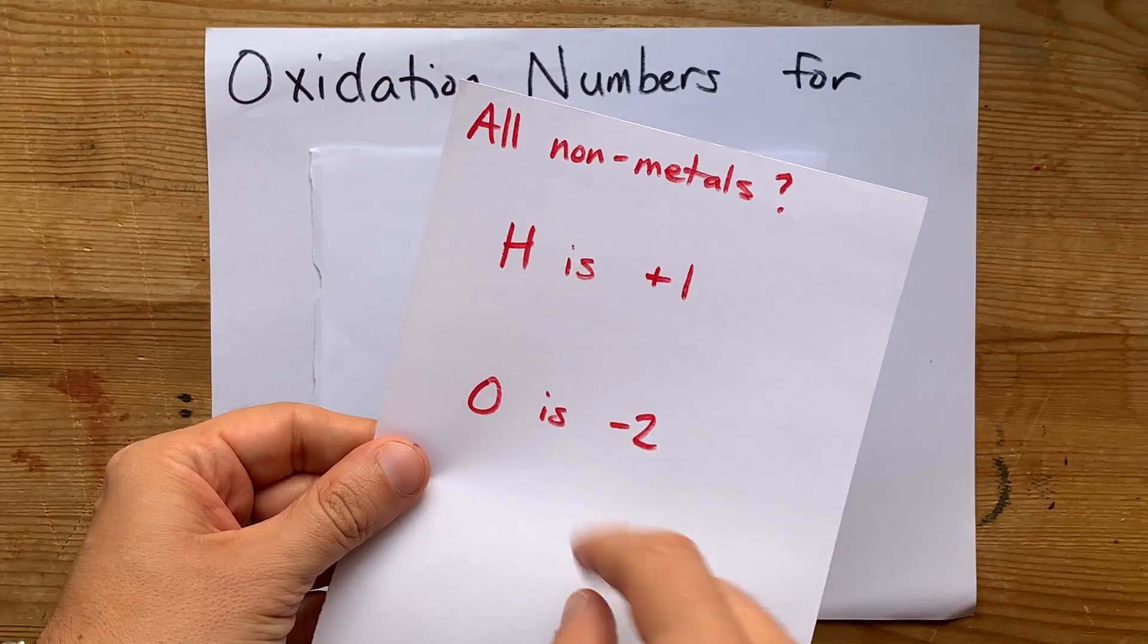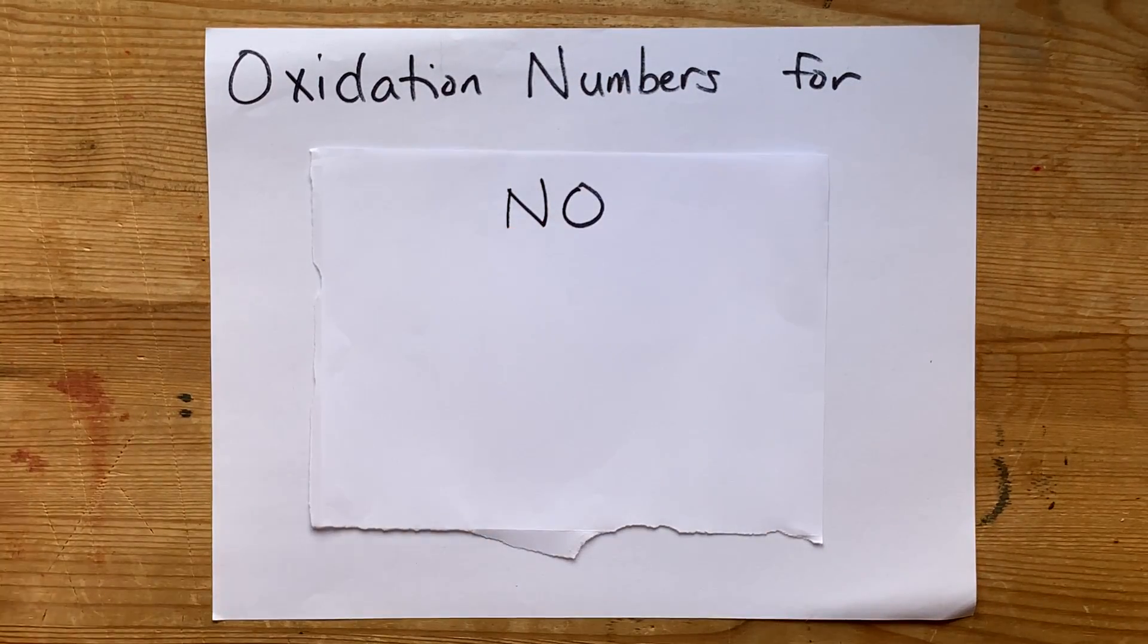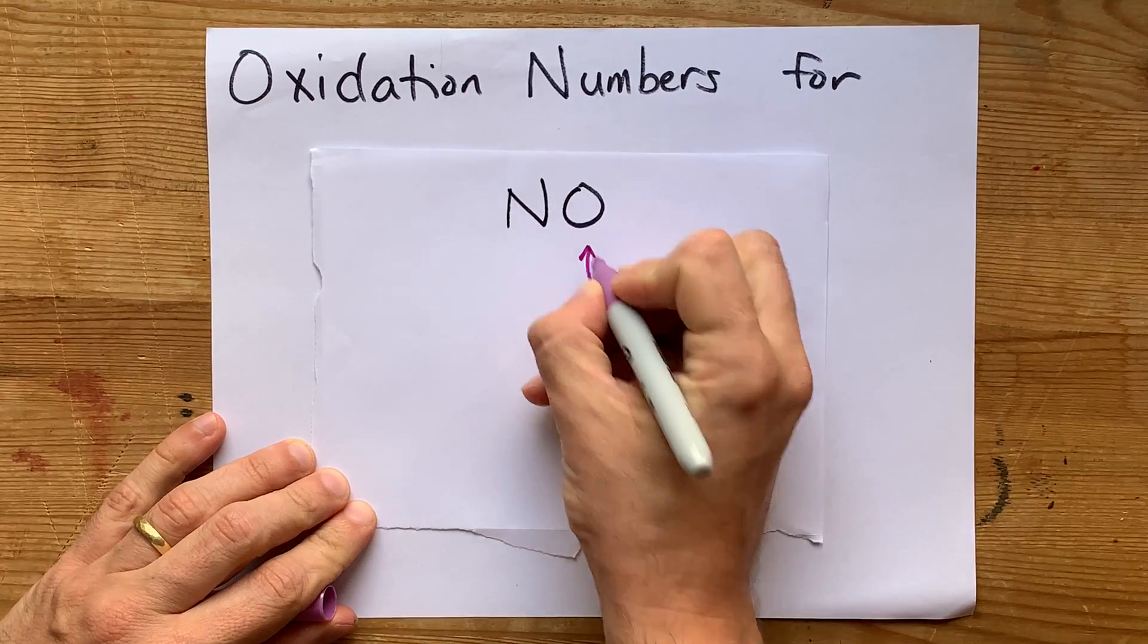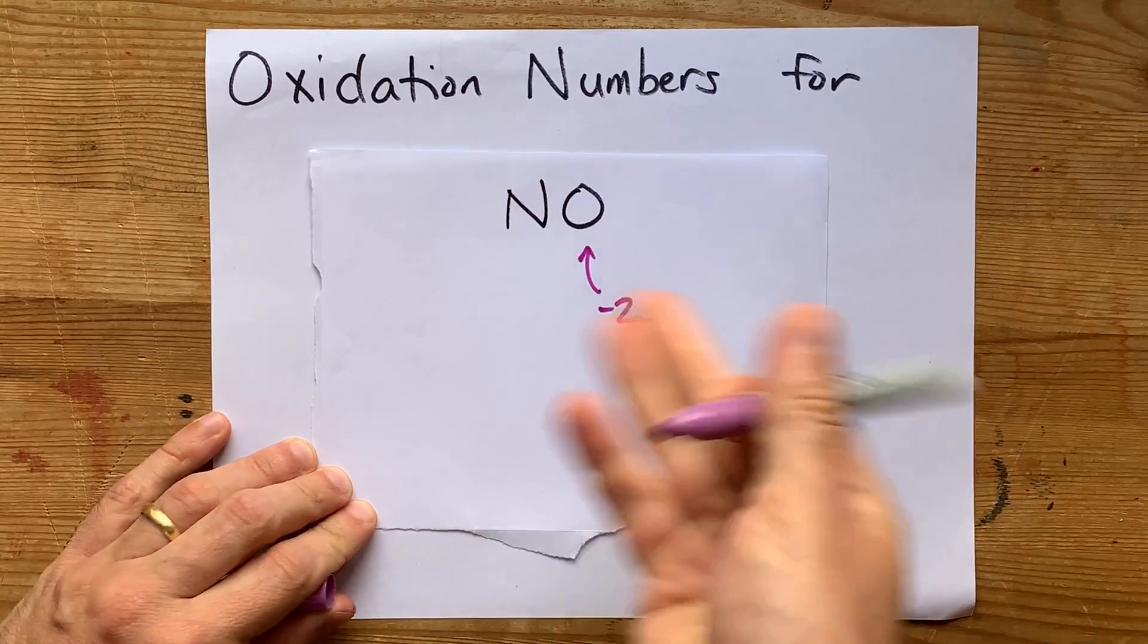The next highest priority rule is that oxygen gets an oxidation number of minus two. So, let's assign that one.